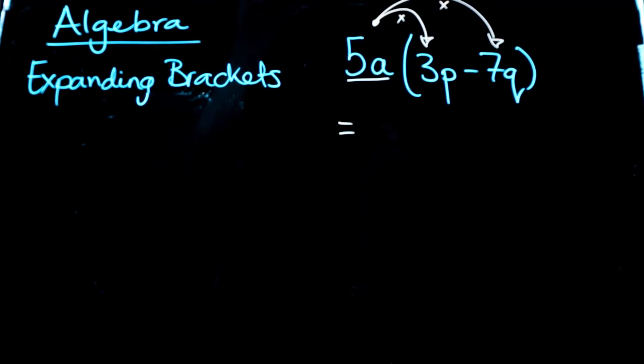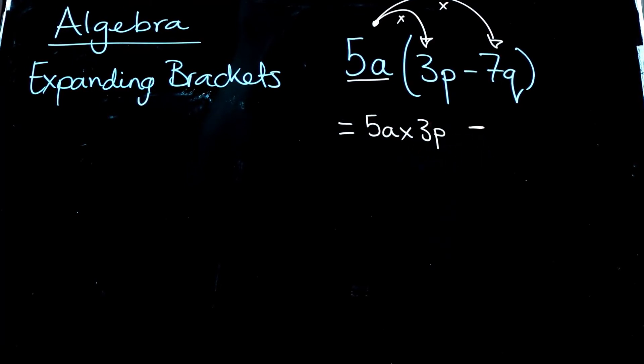So we've got 5a. I'm just going to write this out the long way here, times 3p. Subtract. There's a subtract sign in there. So see how I'm carefully trying to keep everything in order here. 5a times 7q. I'm trying my best to keep everything in a little line here, and that helps me check that I've done the right thing.